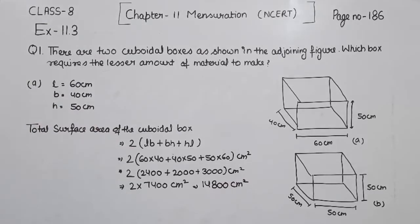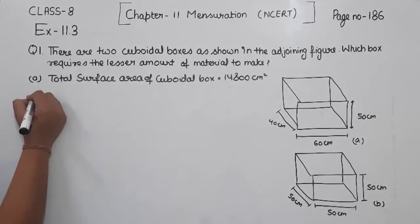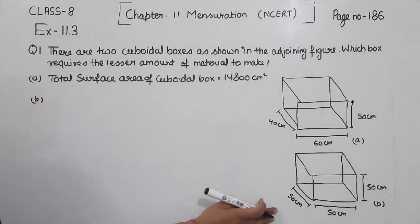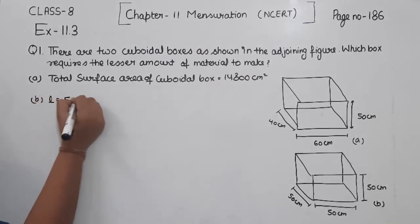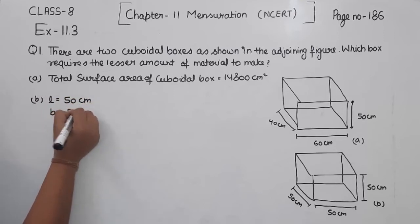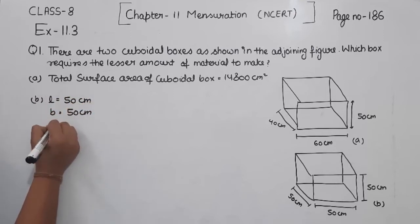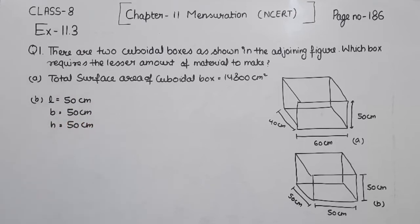So 14,800 cm² is the total surface area of the first cuboidal box. Now for part B, the second box has length equal to 50 centimetres, breadth equal to 50 centimetres, and height equal to 50 centimetres.